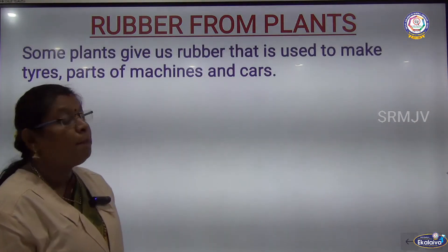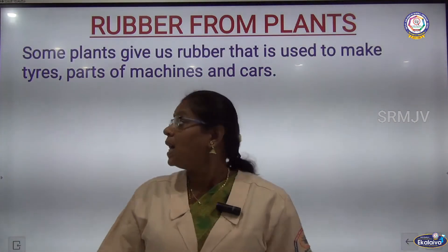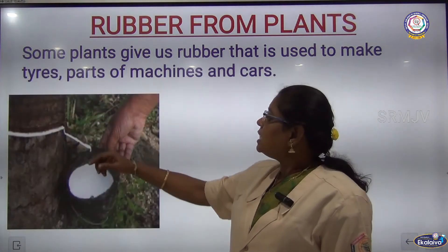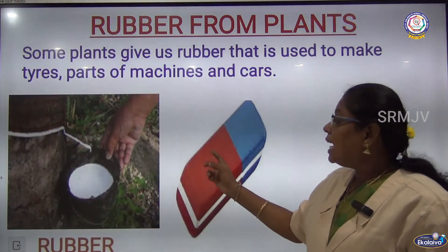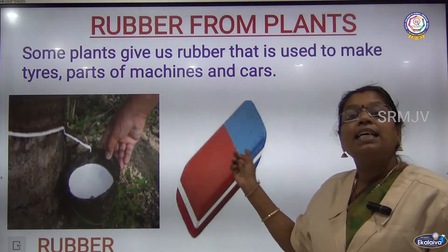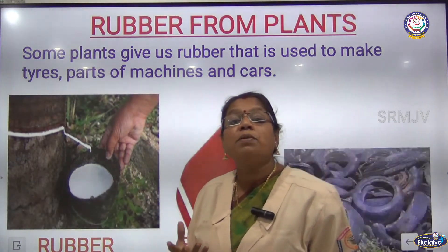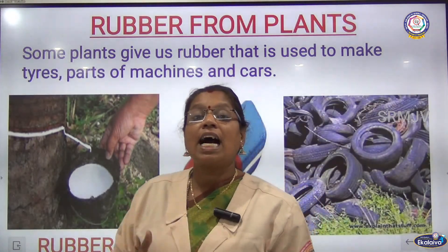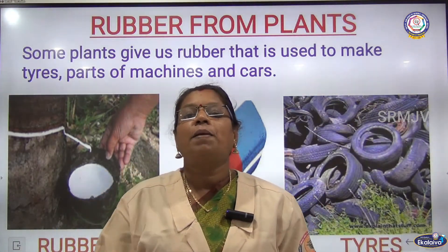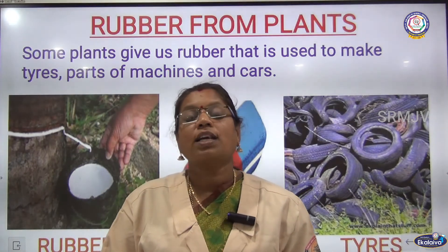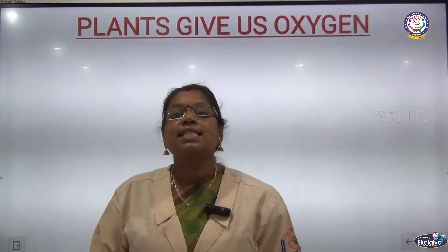We also get rubber from plants. From rubber we get erasers, tyres, machine parts and even car wheels — all from rubber plants.